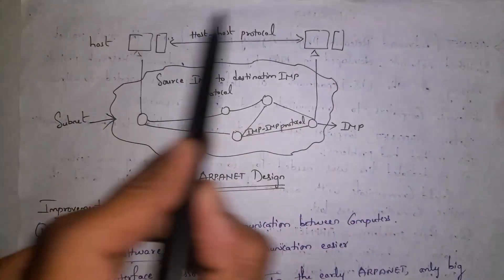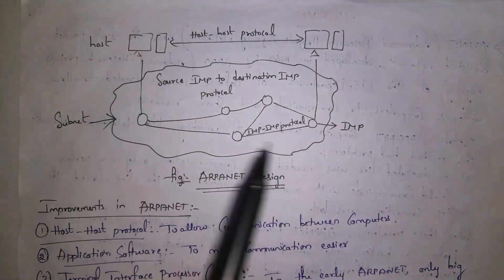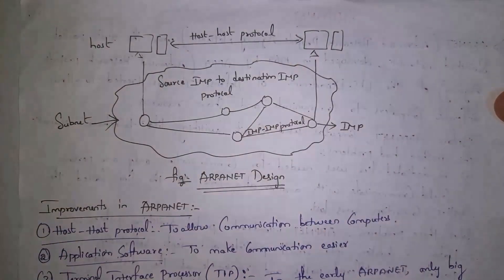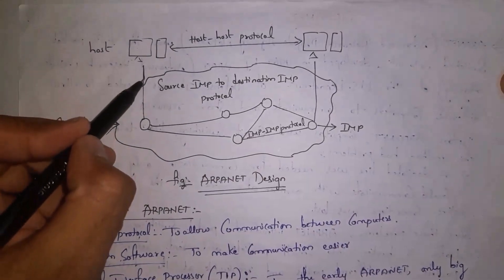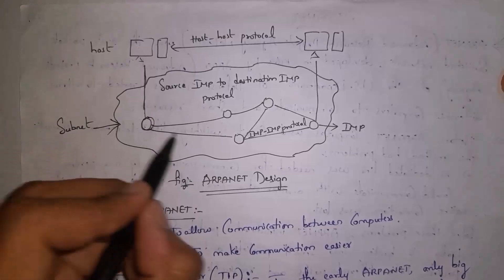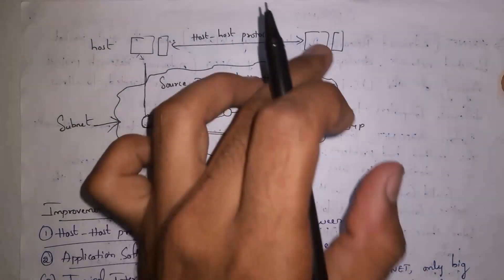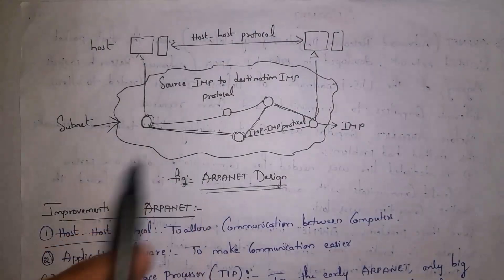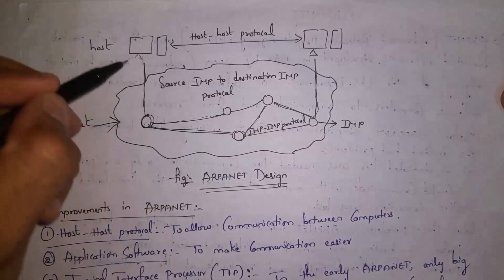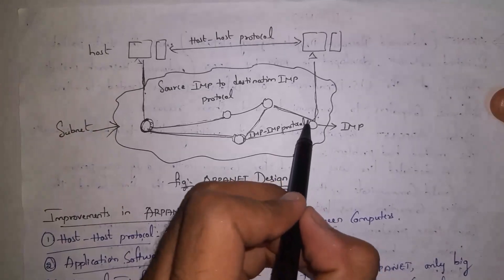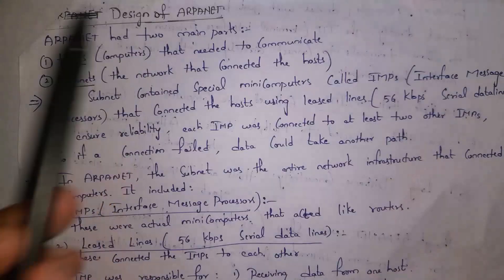This is ARPANET architecture. For example, this computer wants to communicate with another computer, so we call these two computers as hosts. Subnet, which is a subnetwork, is a network that contains IMP devices and leased lines. From the leased line, that is from cables, data is transferred to the IMP device, and from that IMP device data is transferred to another IMP device, and then data is transferred to the destination host. Leased lines are cables which connect different IMP devices and also connect host to IMP devices.